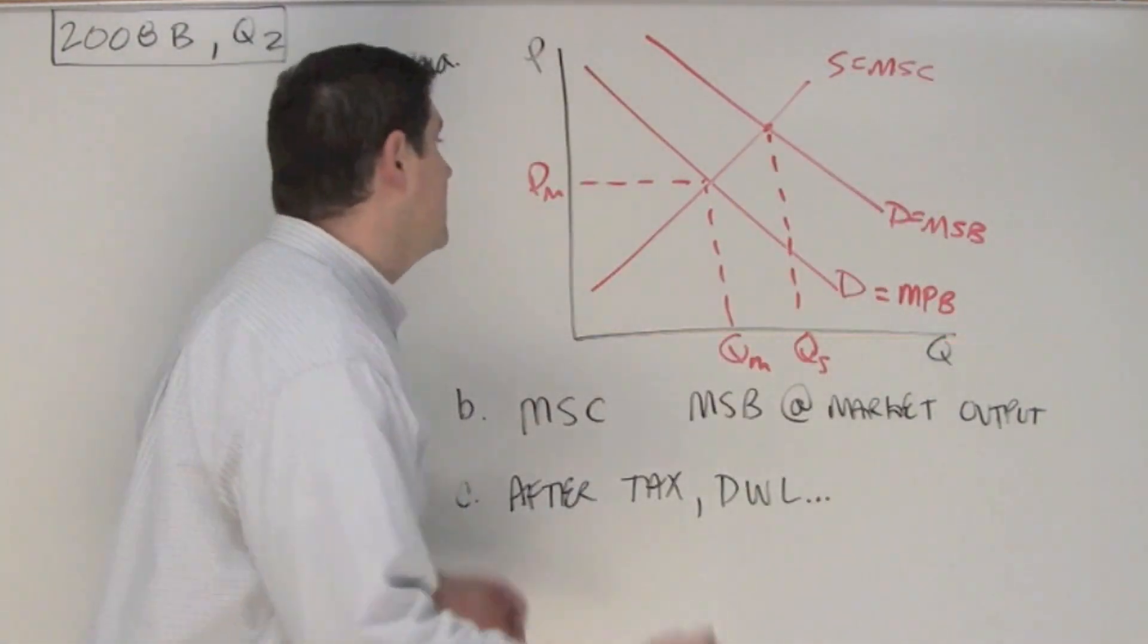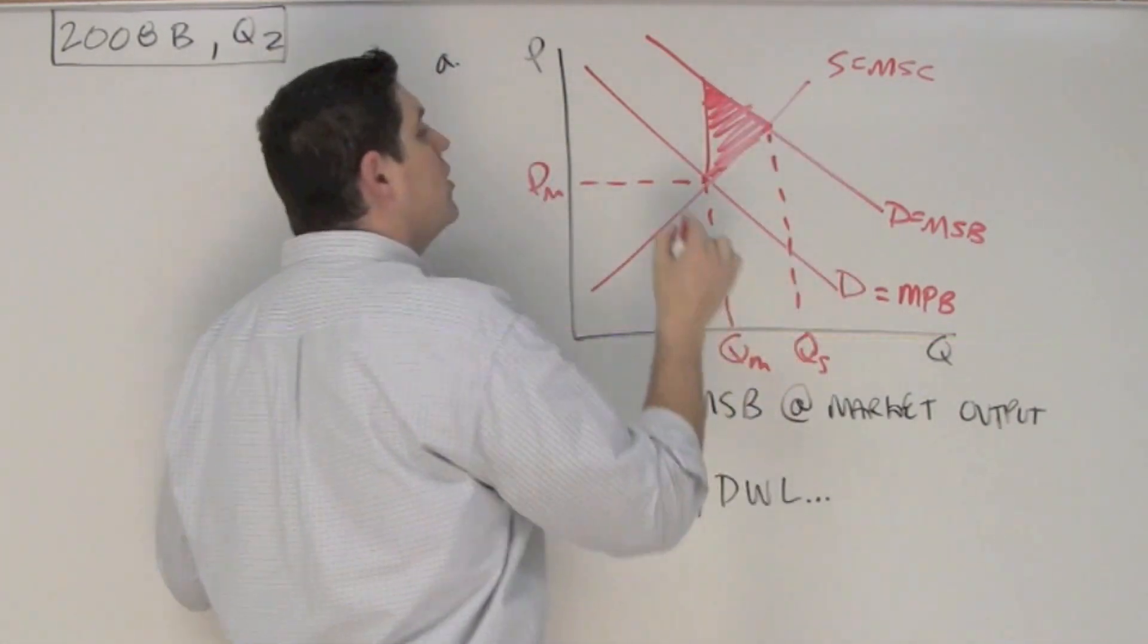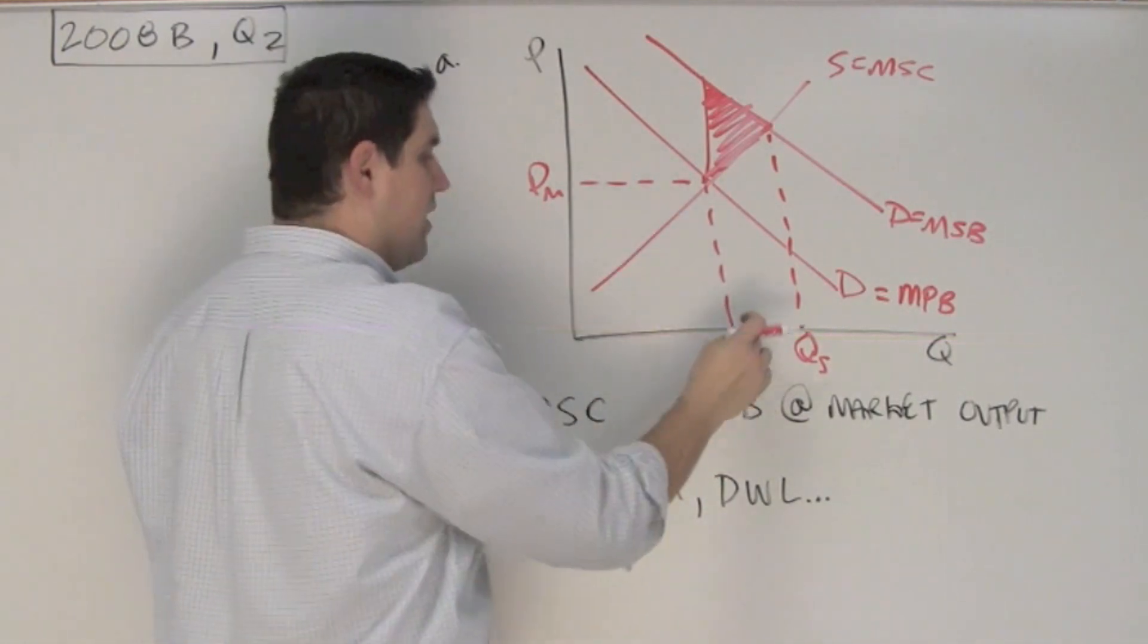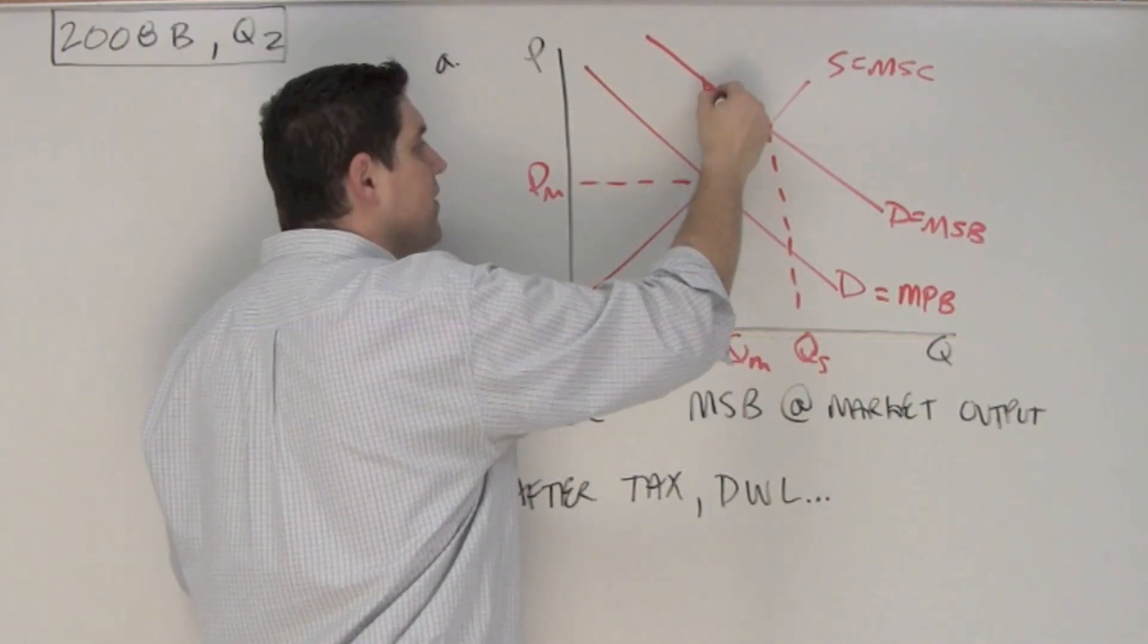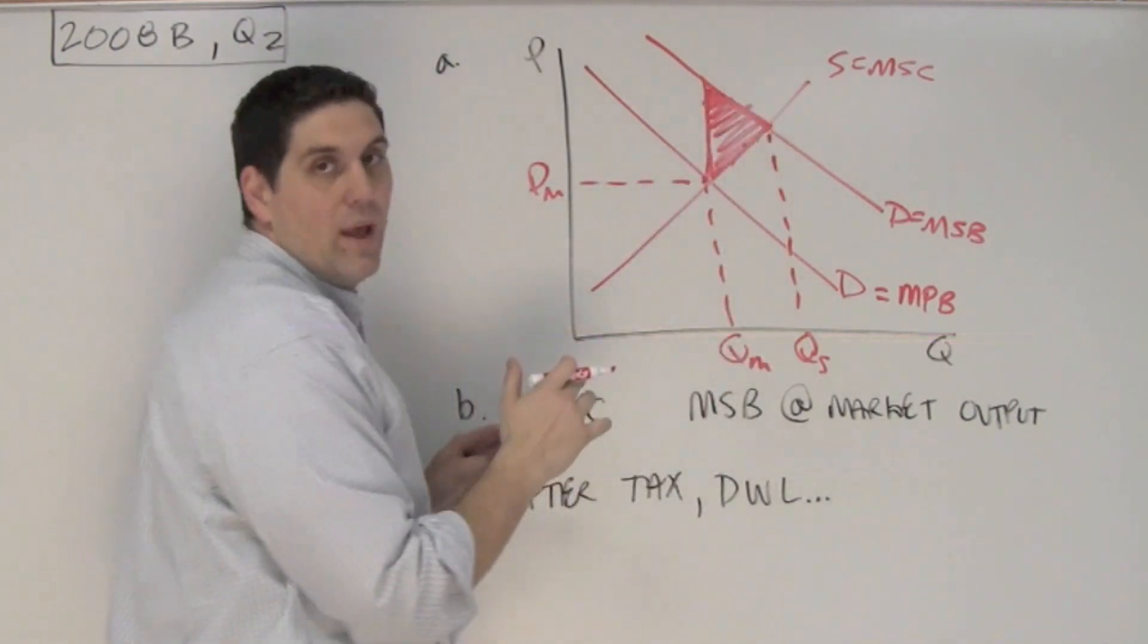Now where is the deadweight loss? Deadweight loss is the triangle right here. This represents the units that we should produce but we're not. Each one of these units, the marginal social benefit is greater than marginal social cost for every single one of them, but we're not producing, so that represents deadweight loss.